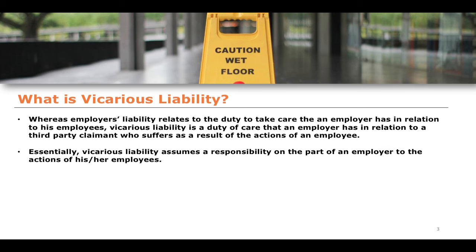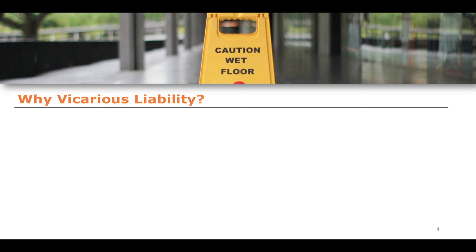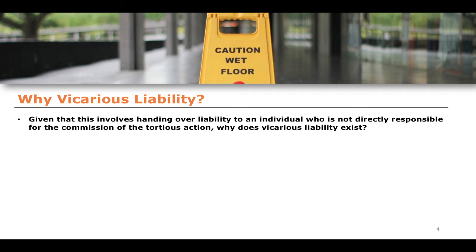Essentially, vicarious liability assumes a responsibility on the part of an employer for the actions of their employees. So why does vicarious liability exist? Given that this involves handing over liability to an individual who isn't directly responsible for the commission of a tortious action, why is it the case that vicarious liability even exists? We're talking about the actions of an employee towards a third party and how, in that circumstance, an employer retains some kind of duty towards this third party.